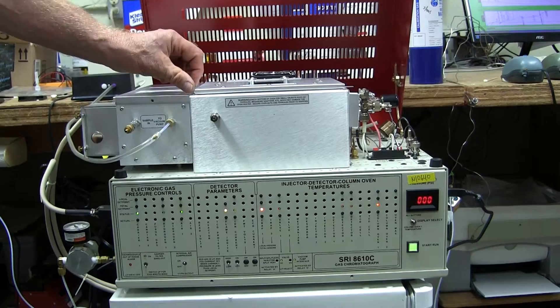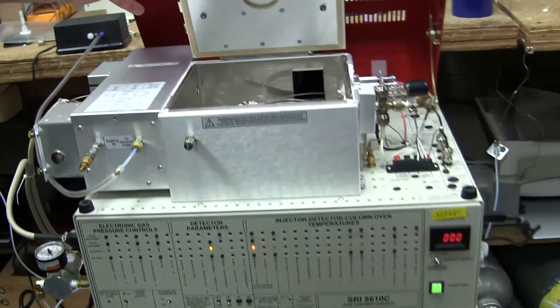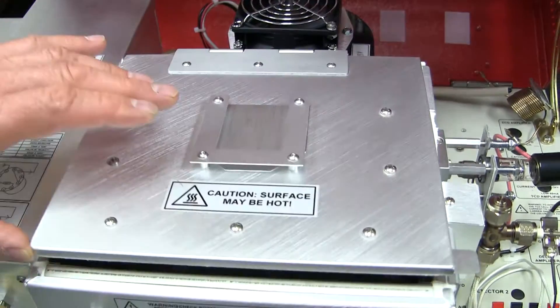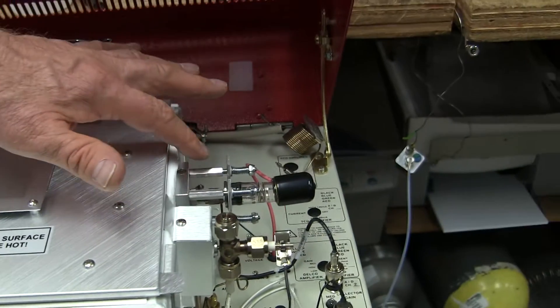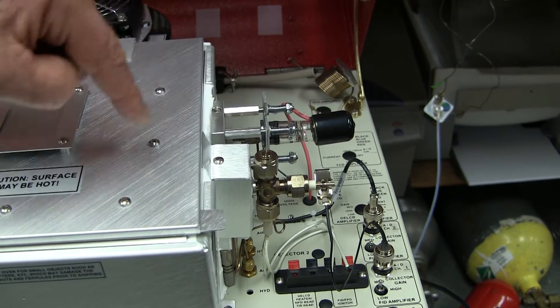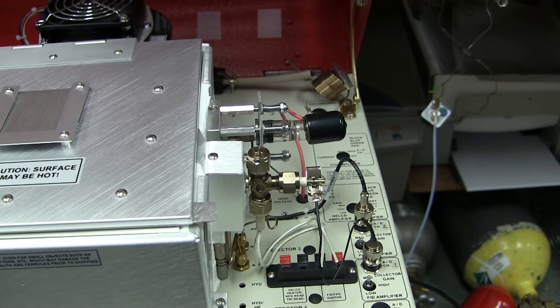Like every SRI GC, there's a column in the column oven. This particular GC is equipped with two detectors, a photoionization detector and a flame ionization detector, and they're running in series so the two detectors see the same molecules.